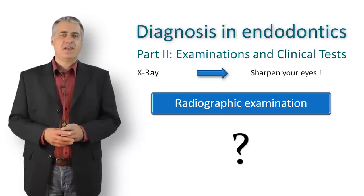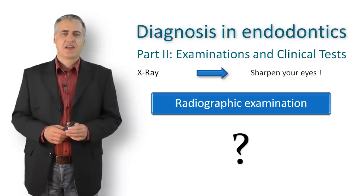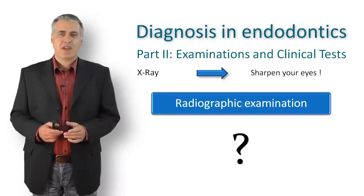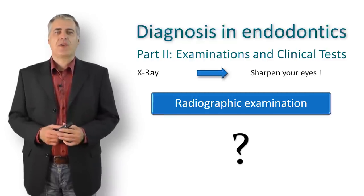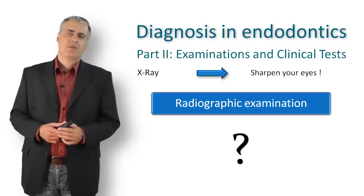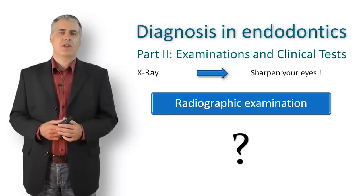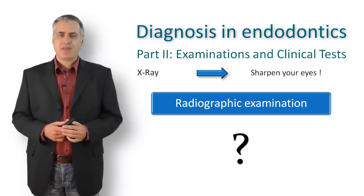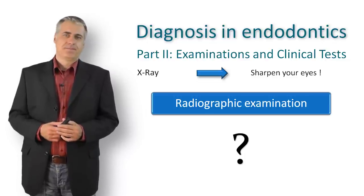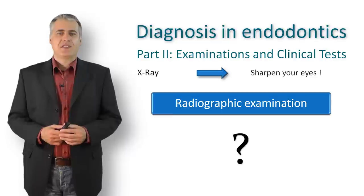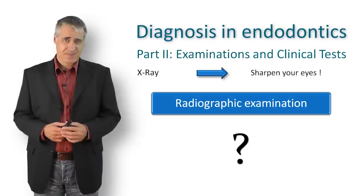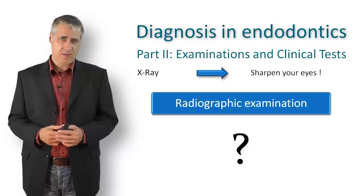An impressive example I saw at a lecture from Prof. Dr. Van Arx, an oral surgeon in Bern, Switzerland: imagine you see an apical radiolucency on an upper central incisor. A root filling is present, but the patient has no pain — it is an incidental finding. The percussion test is negative, there is no swelling, and pocket depth is within normal limits, but you see that radiolucency around the apex, which could be an indication for endodontic treatment.